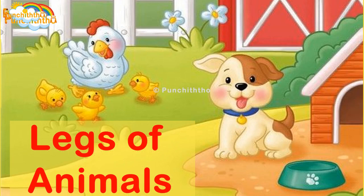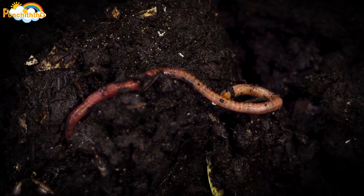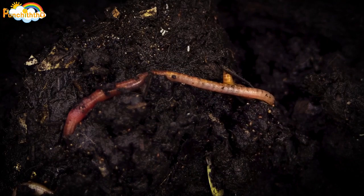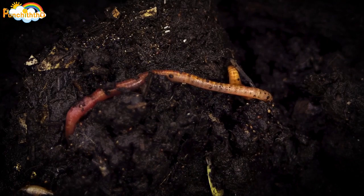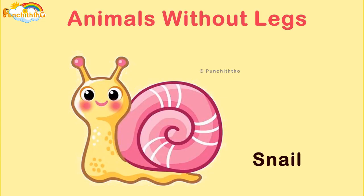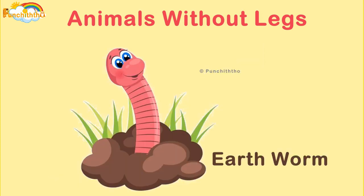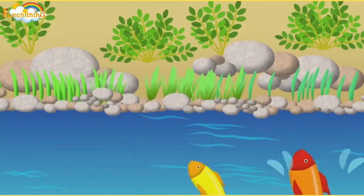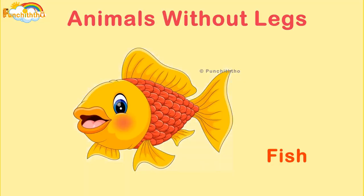There are some animals with no legs. How do they move? They move by crawling. Can you remember such animals? You may remember snails. Do snails have legs? No, snails don't have legs. Likewise, snakes and earthworms too don't have legs. Do fish have legs? No, fish don't have legs either — they move with their fins.